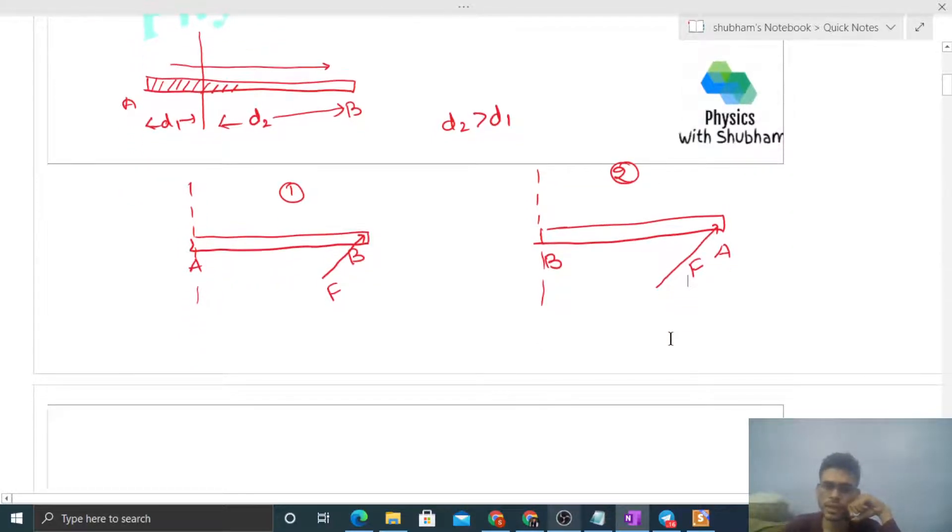Let's check moment of inertia first. I1 will be moment of inertia about center of mass plus total mass of the rod times d1 squared, using parallel axis theorem. I2 will be I about center of mass plus m times d2 squared. Since d2 is greater, I2 will be greater than I1. So moment of inertia is different in both cases.